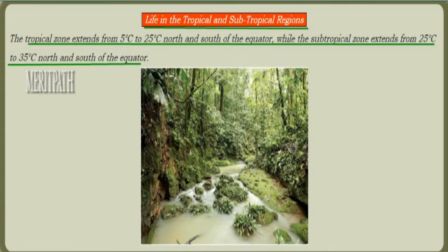Let's learn about a new chapter called life in the tropical and subtropical region. The tropical zone extends from 5 degrees to 25 degrees north and south of the equator. The subtropical zone extends from 25 degrees to 35 degrees north and south of the equator.